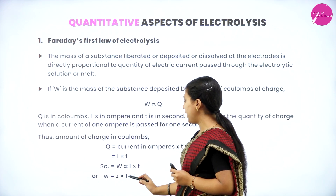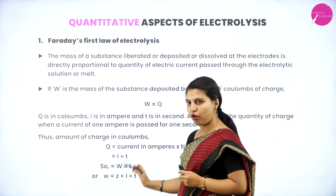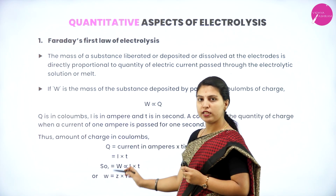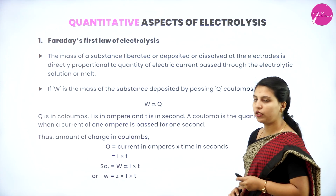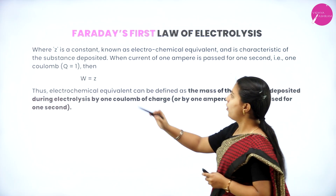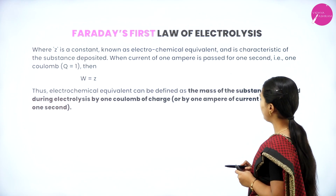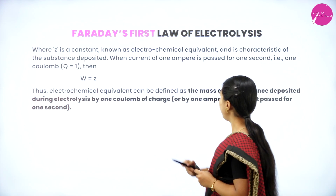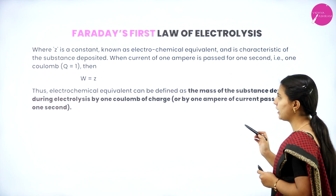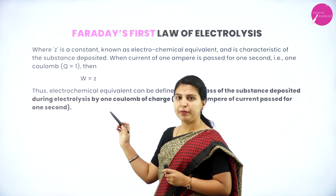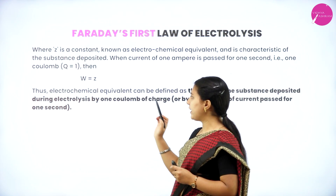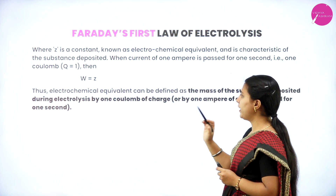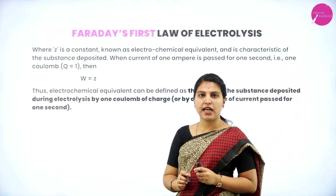W = Z × I × T, where Z is a constant. Whenever a proportionality symbol is present, a constant must be introduced. Z is a constant known as the electrochemical equivalent, and it is characteristic of the substance deposited. When a current of 1 ampere is passed for 1 second (Q = 1 coulomb), W equals Z. Thus, the electrochemical equivalent is defined as the mass of substance deposited by 1 coulomb of charge.